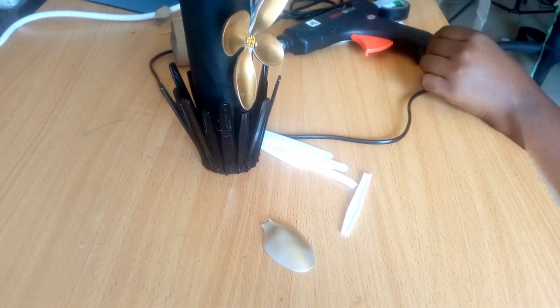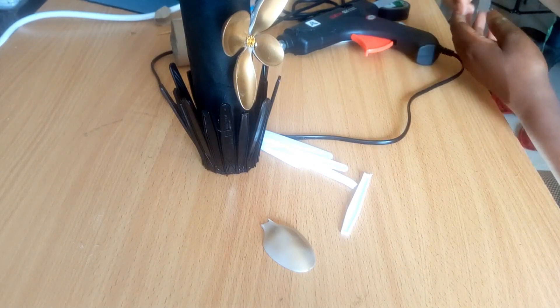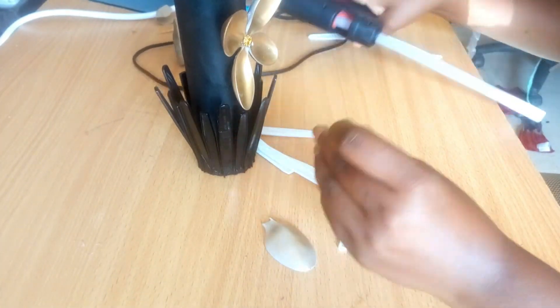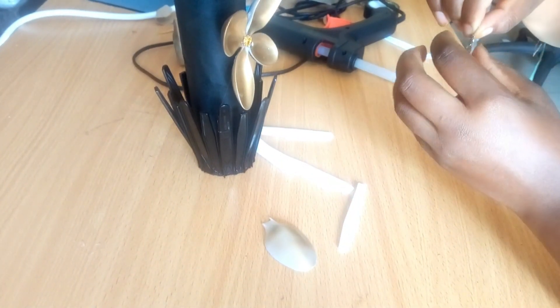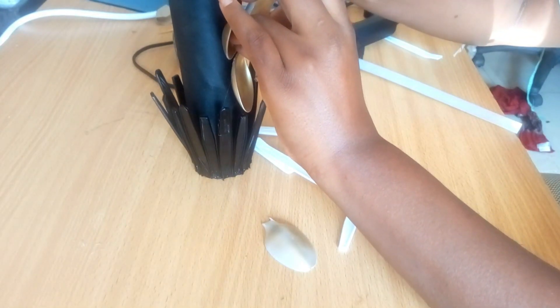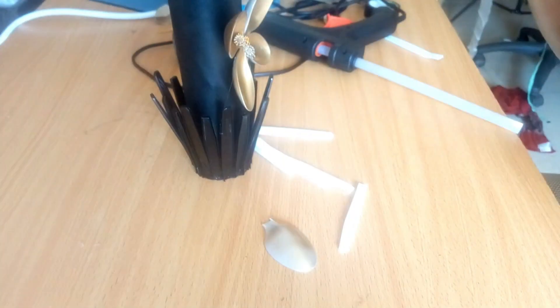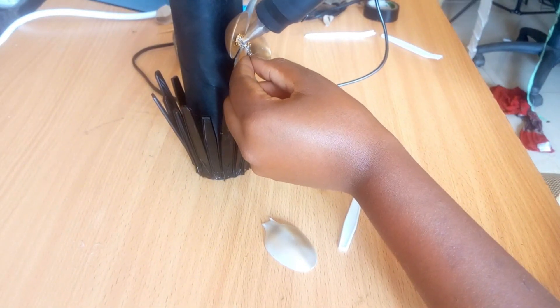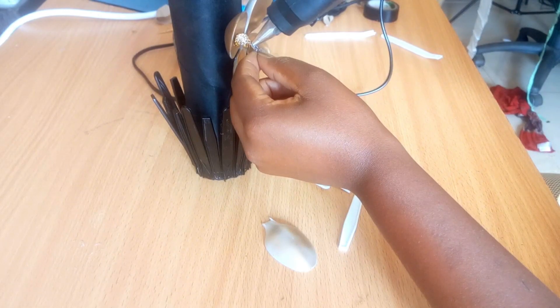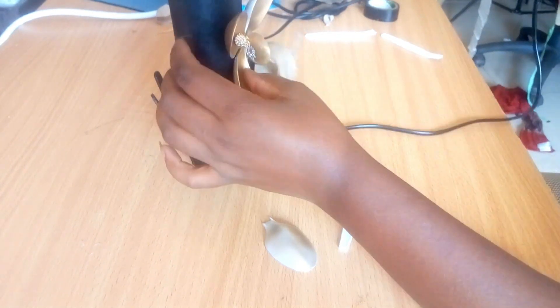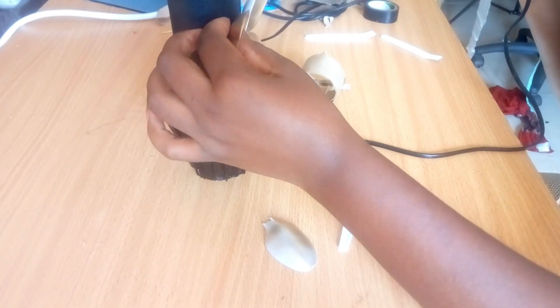So if you haven't watched the wine bottles DIY, go back kindly and watch it because this is just one crazy project. Like the projects are connecting, they're coming in handy, so nothing is going to waste as I said. So this mesh is from the wine bottles and it's here to decorate the spoons.